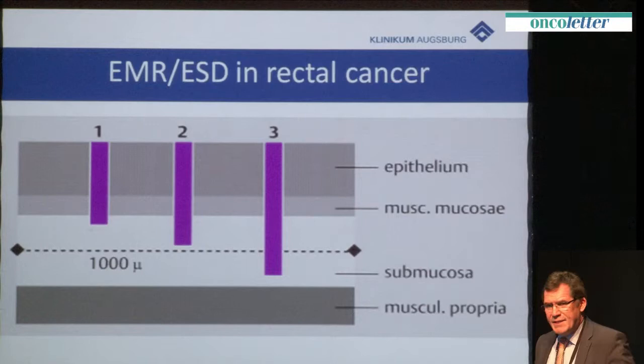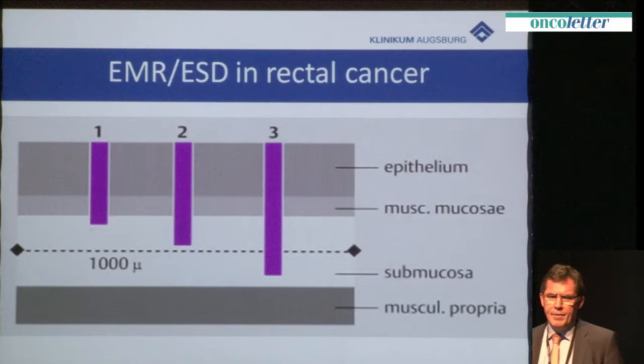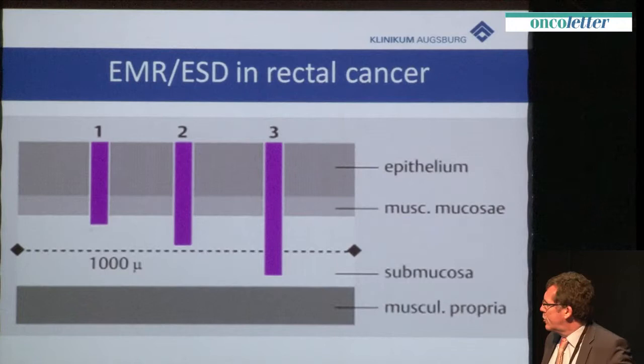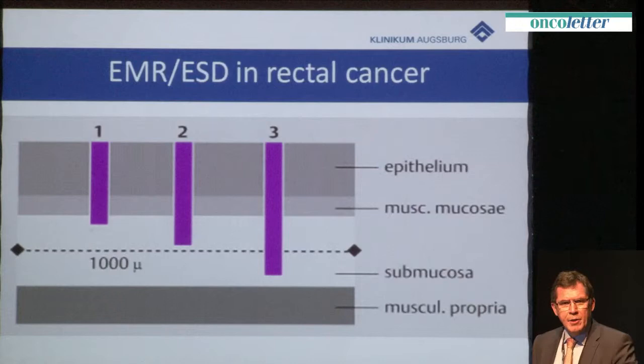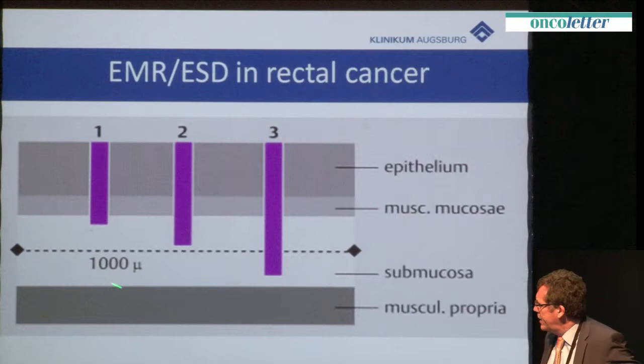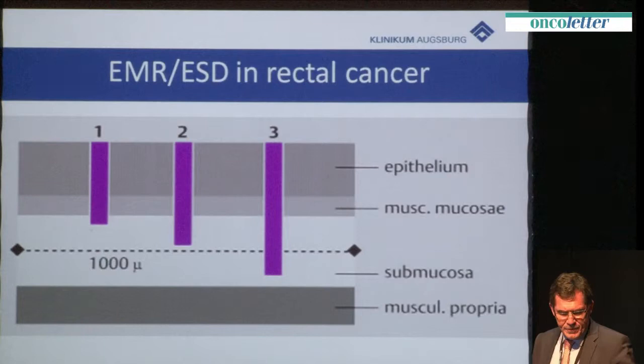The SM classification can only be used if you have a resected specimen — it is not helpful for endoscopic treatment because you will never resect the whole submucosa. Therefore, it's not appropriate to define the submucosa in three thirds. We usually use 1000 micrometers as the border. Lesions up to 1000 micrometers have a low risk of lymph node metastasis, about 1 to 2 percent, while lesions beyond 1000 micrometers have a higher risk.